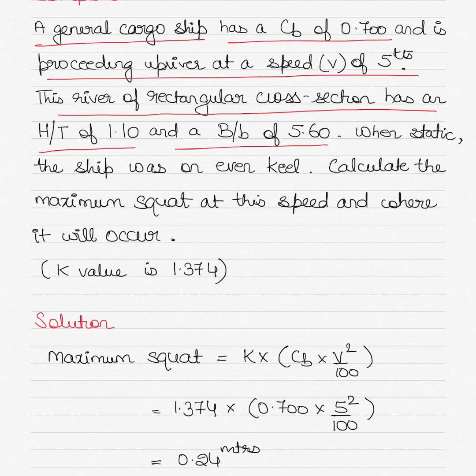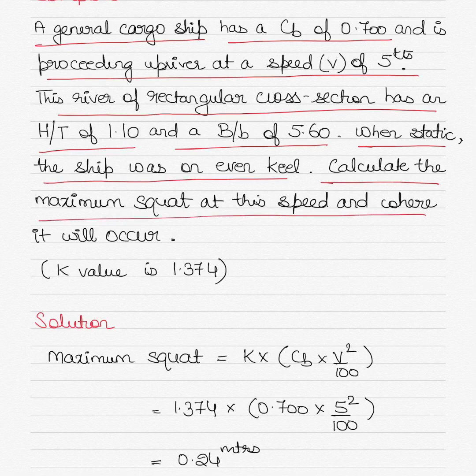So I will not repeat what they stand for. When static or stationary, the ship was on even keel draft. Calculate the maximum squat at this speed and where it will occur, whether it is bow or stern. And again the K constant value is given to you as 1.374.